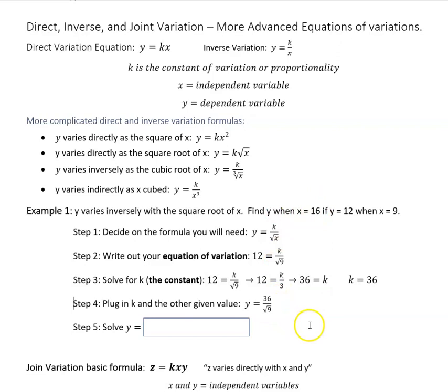You're going to plug in k, which is 36, and the other given value, which is 16. We're trying to find out what is y when x is 16. So I'll plug into that and get k is 36, and x is 16, not 9. And then we're going to solve that for y. And we get 36 over square root of 16, which is 36 over 4, and y equals 9.